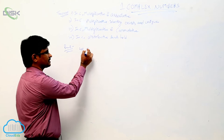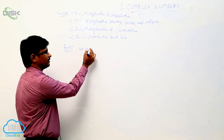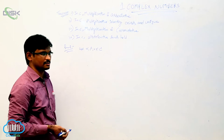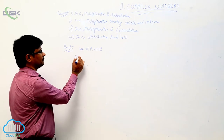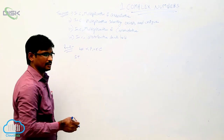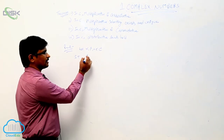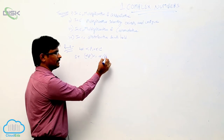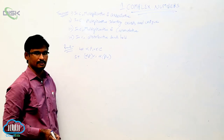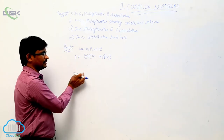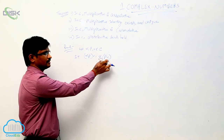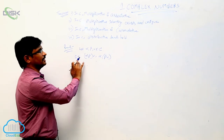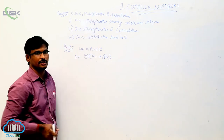Consider three complex numbers: alpha, beta, gamma. We have to show that multiplication is associative, that is, alpha beta into gamma equals alpha into beta gamma. We have to prove this one. First, we will simplify both sides, and if both are same, then we can say that multiplication is associative.